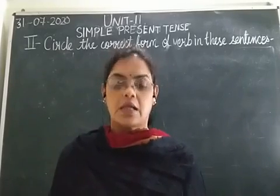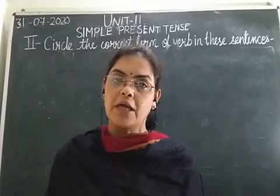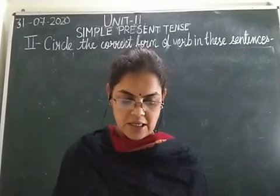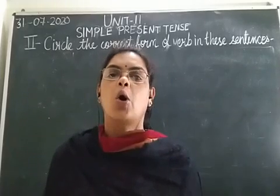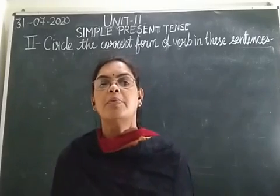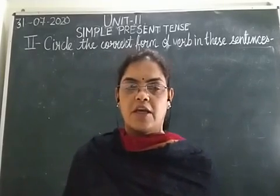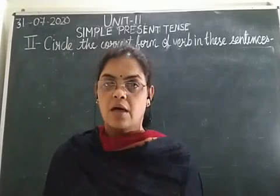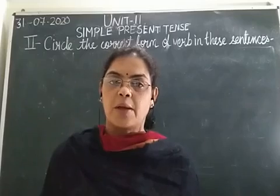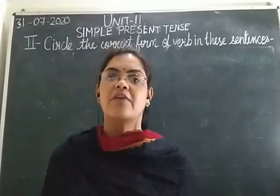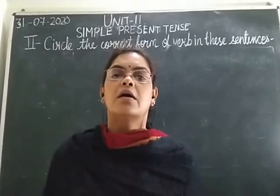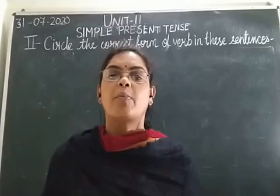Exercise 2 on Simple Present Tense — circle the correct form of the verb. The first sentence: Rhea knows all the answers. Please make a circle on the verb 'knows.' We choose K-N-O-W-S because, as per subject-verb agreement, if our subject is singular, we need to add S to the root form of the verb.